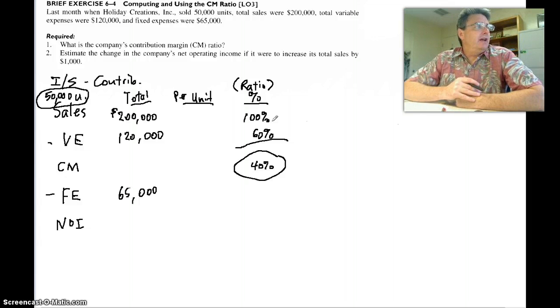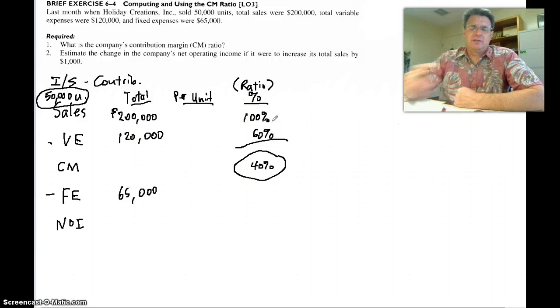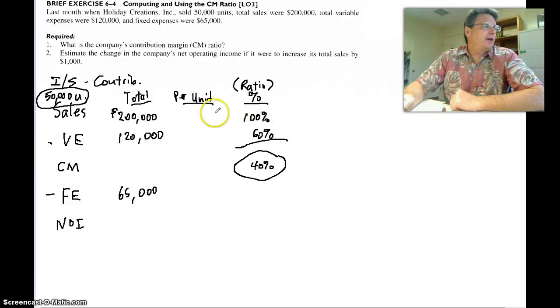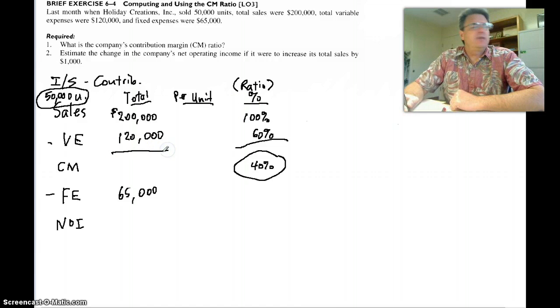Two, estimate the change in the company's net operating income if it were to increase total sales by $1,000. In fact, do you mind if we finish out this before we do that one? Let's finish out our little income statement format here.